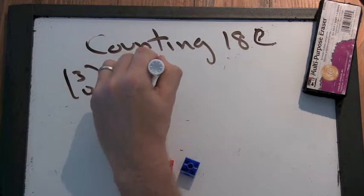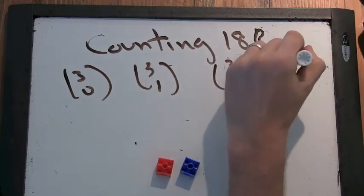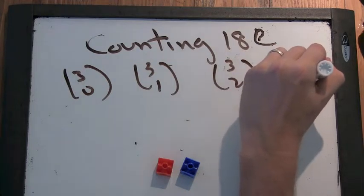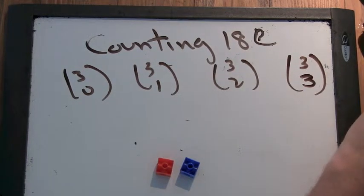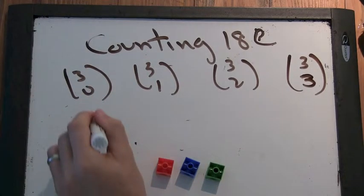Three choose zero. Three choose one. Three choose two. Three choose three. Well, that's quite... There's just one way to choose the zero. Yeah. One.